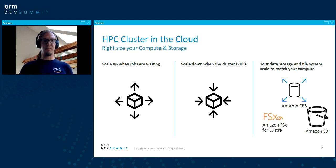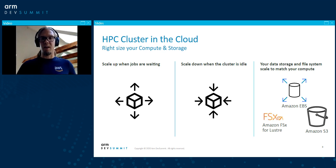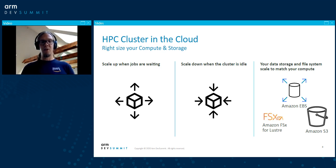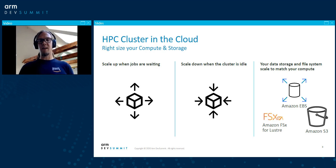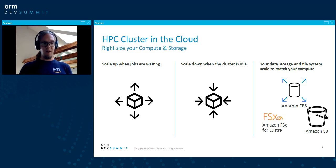The compute resources only get provisioned when jobs are placed into the queue, and as soon as the queue is empty, those resources are quickly scaled down again — so the cluster is basically empty when it's idle. Another major differentiator of cloud HPC is that you can tune and adapt your compute environment to your application on a per-application basis. Once you've selected the right instance type, you can also select the right storage — whether a Parallel Lustre file system, local disk, or object storage — and tune it to the right size for your application needs.